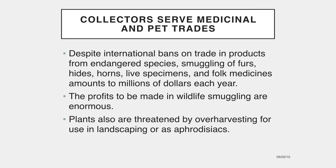In addition to harvesting wild species for food, we also obtain a variety of valuable commercial products from nature. Much of this represents sustainable harvest, but some forms of commercial exploitation are highly destructive and a serious threat to certain rare species. Despite international bans on trade in products from endangered species, smuggling of furs, hides, horns, live specimens, and folk medicines amounts to millions of dollars each year.